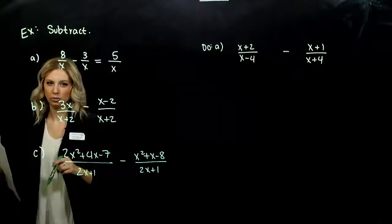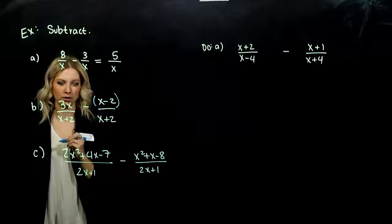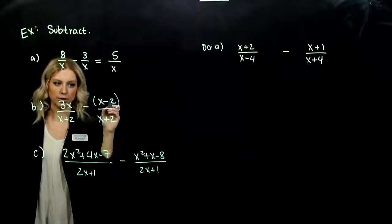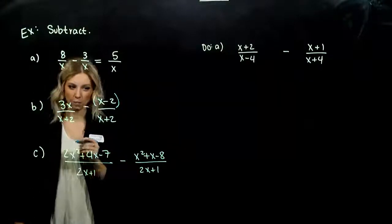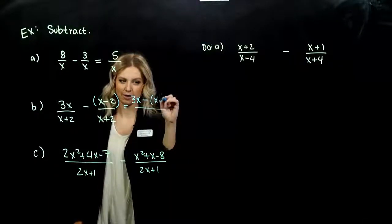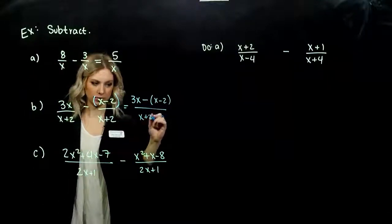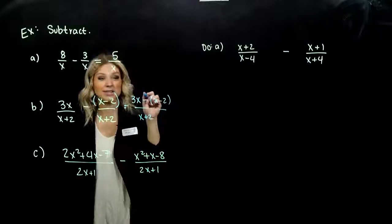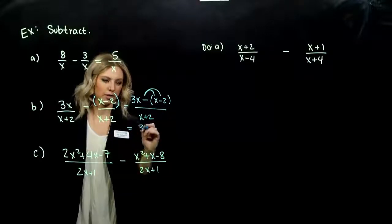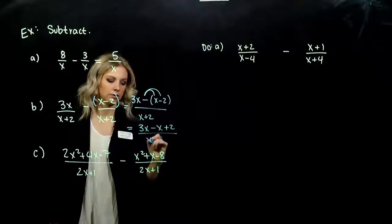When we have more than one term, it's helpful just to throw parentheses everywhere, grouped together what comes together, because we're subtracting that entire quantity x minus 2, not just x. So when we go straight across the top here, I've got 3x minus that entire thing, x minus 2, all over our common denominator, x plus 2. When we need to simplify this, we've got to distribute the negative in to get rid of the parentheses.